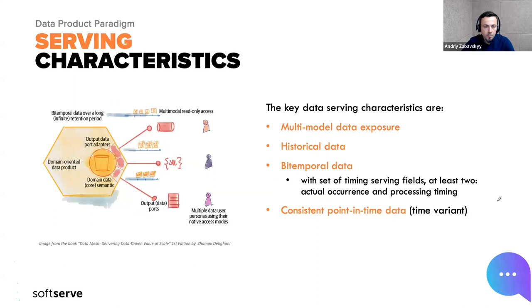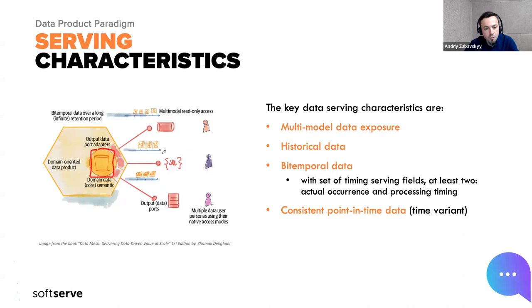Besides data and code, metadata and configuration, as well as references and specifications about each part of the infrastructure, should also be included. Regarding serving — how we serve data out of data products — the idea is that the dataset can be served in different ways. Different output ports or exposure mechanisms should be supported. For example, it could be exposed via a SQL interface, or as some kind of publish-and-subscribe communication between products. It's important to provide a good number of interfaces to serve the data properly.